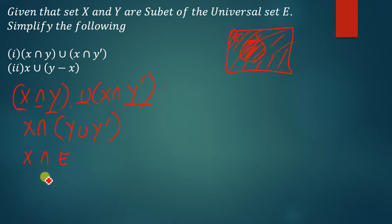x intersection the universal set is simply just x. So this one has been simplified. x intersection universal set is simply just x.